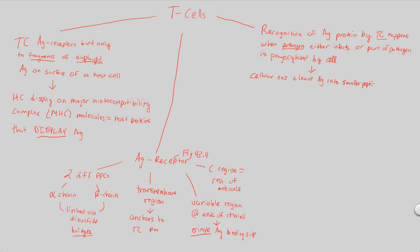When you cleave an antigen into smaller peptides — the original large protein-type molecule is now a smaller peptide structure — you have created antigen fragments. That's what we need to display: fragments of antigen, not just antigen. So we break down the antigen into smaller peptides. Next, these antigen fragments bind to MHC molecules — those displaying molecules that are good at displaying fragments of antigen.